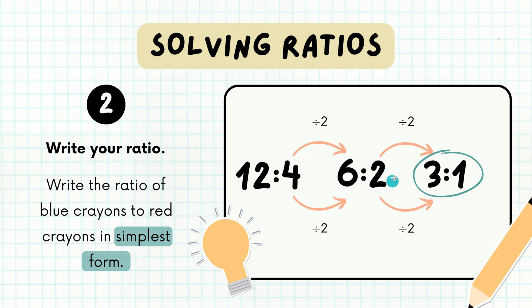Now in looking at 6 to 2, I still feel like there's more that I could do here, so I'm going to divide it by two again. Six divided by two gives me three, two divided by two gives me one. So now I can think to myself, I have simplified this as much as I possibly can. It is in the lowest possible terms, so that is the value of my ratio.